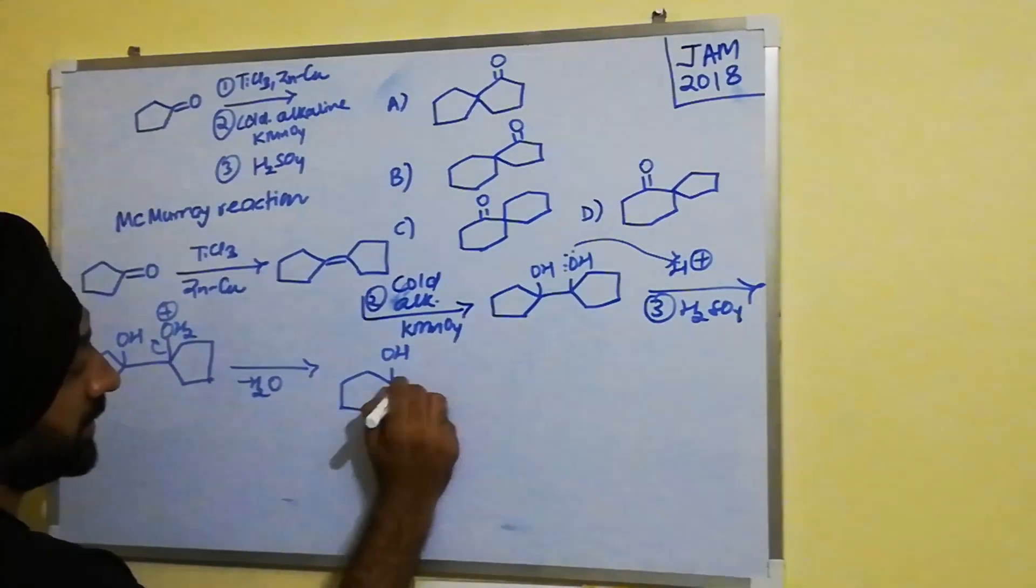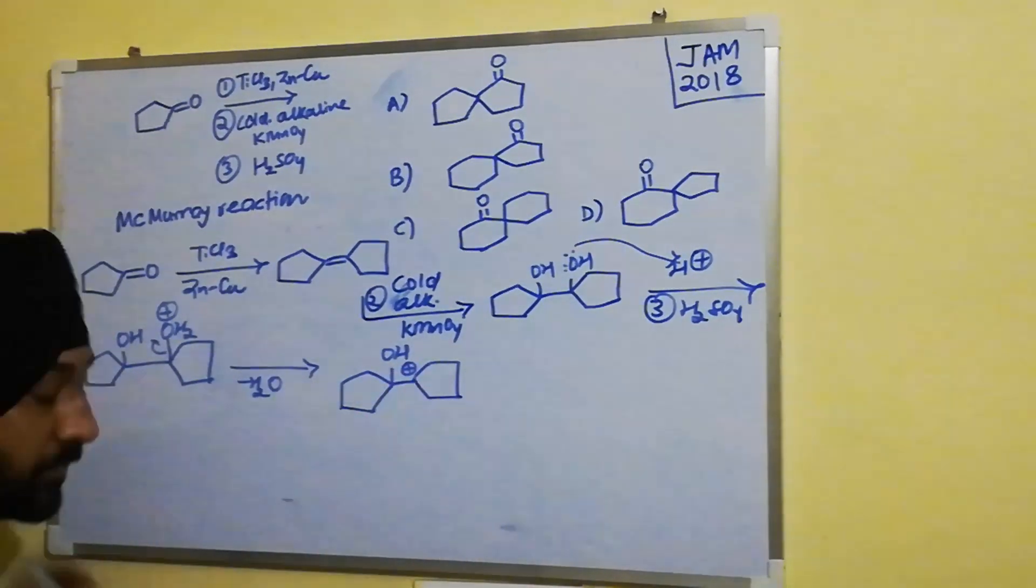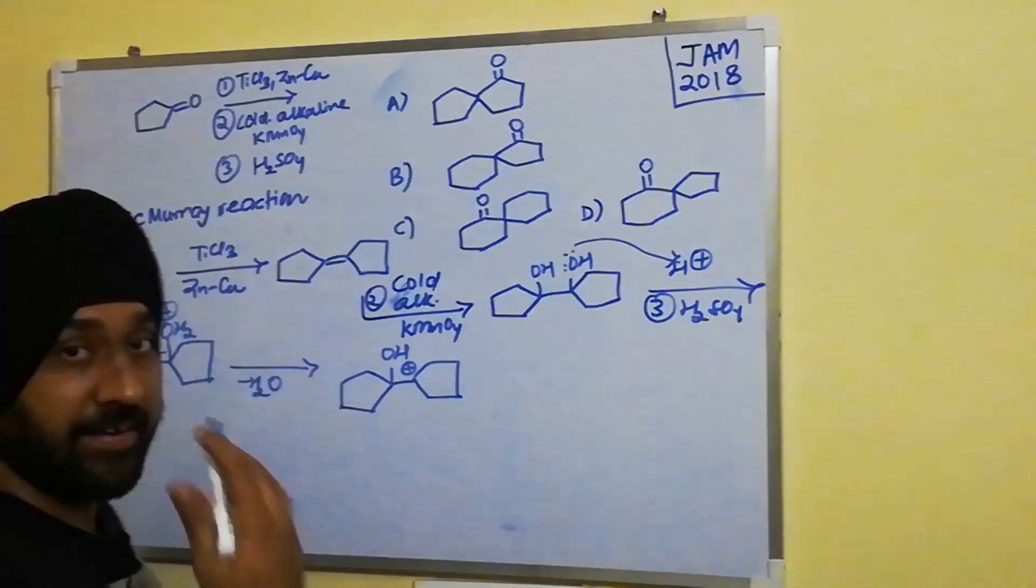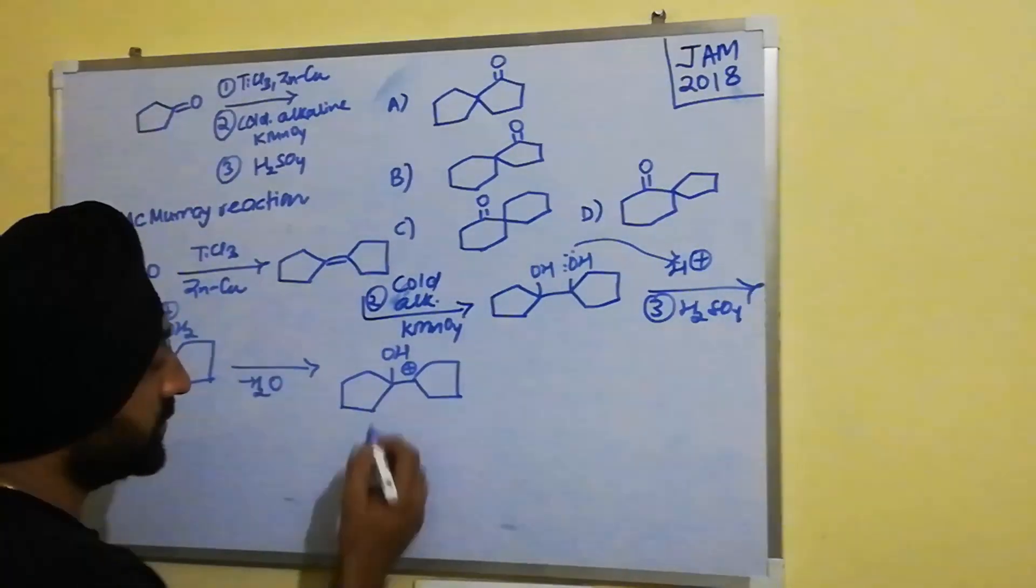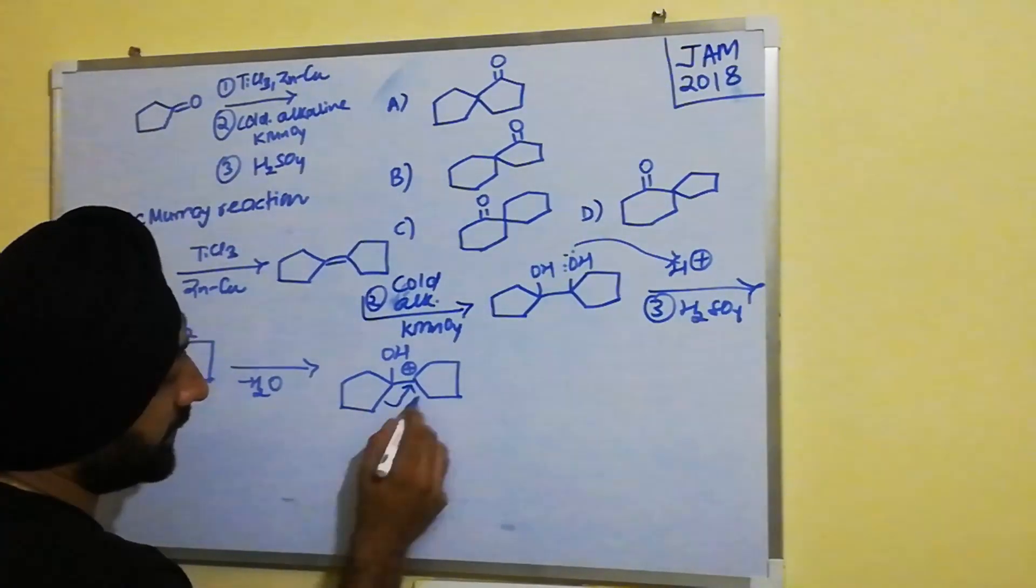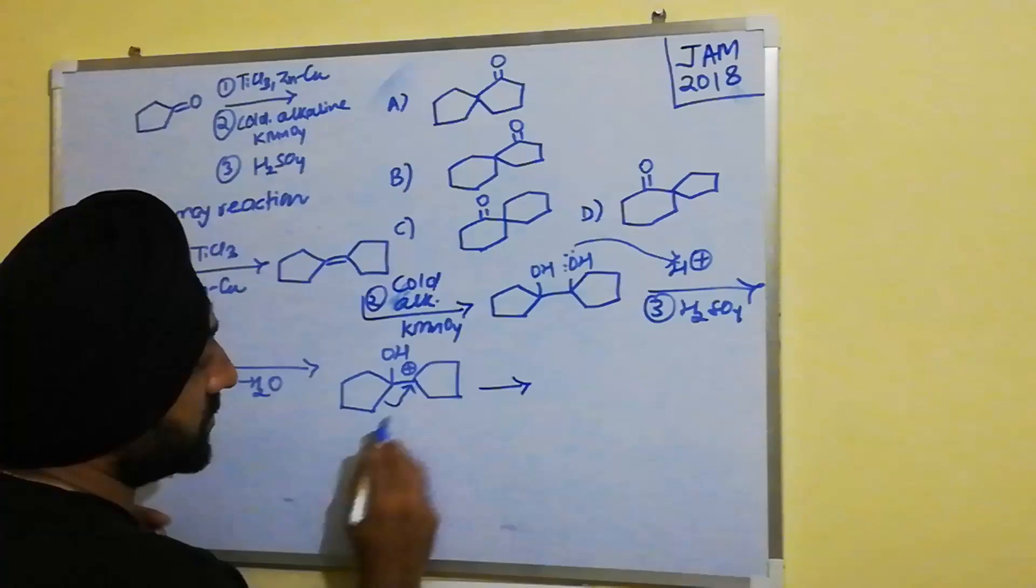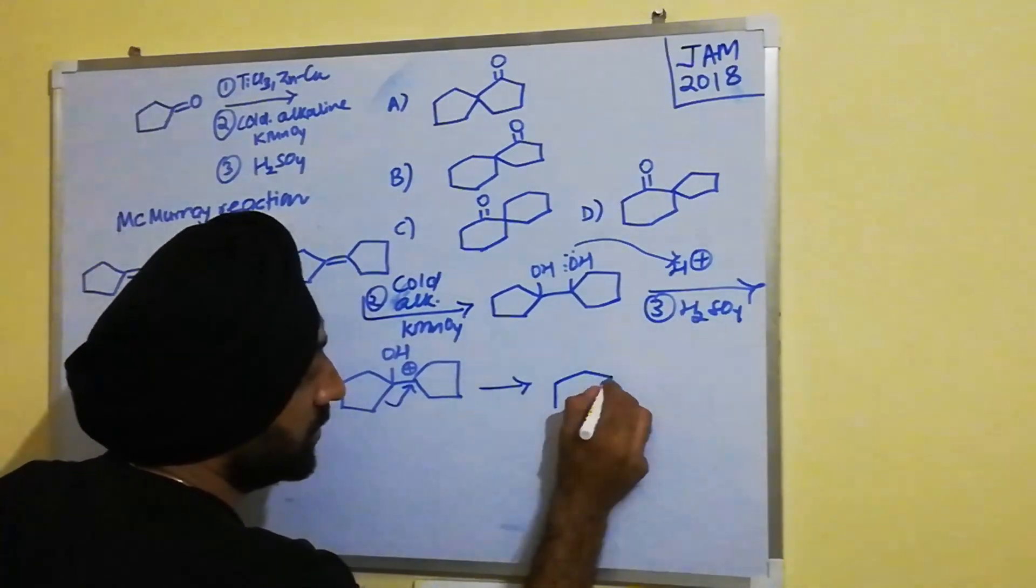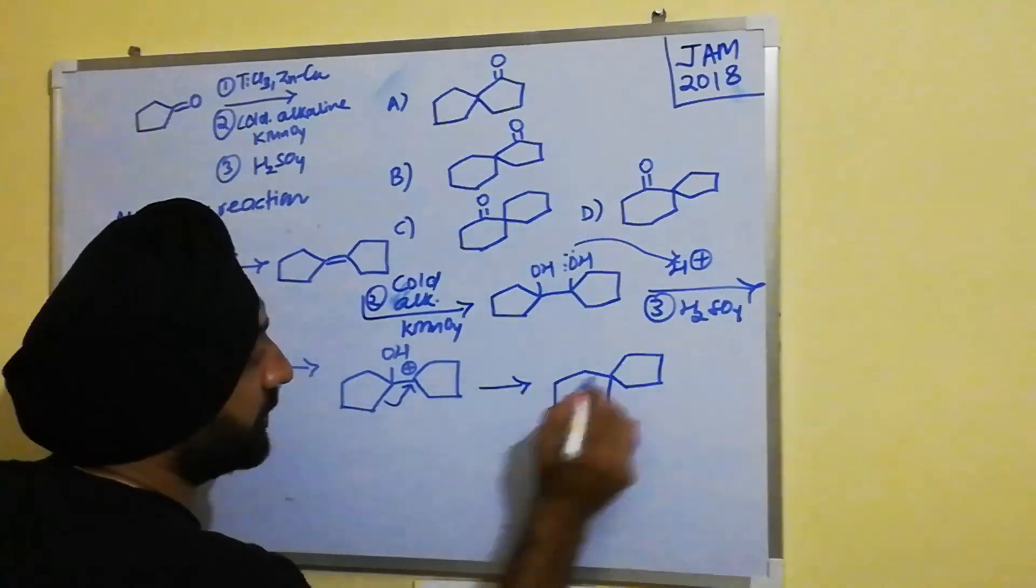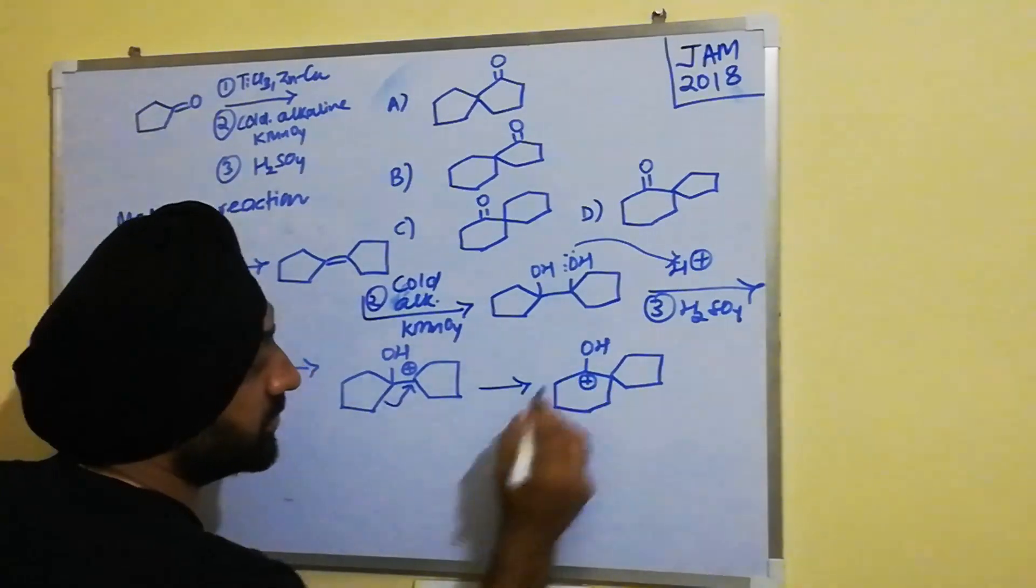Now this is interesting. What happens here? There is a ring expansion that takes place. Now you have this single bond attacking this carbocation and it leads to the formation of a six membered ring. So we have the six membered ring and then this five membered ring, and this positive charge now is on this carbon.